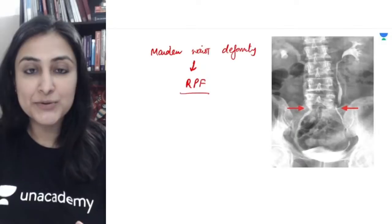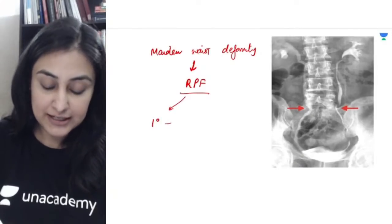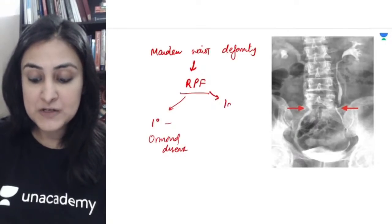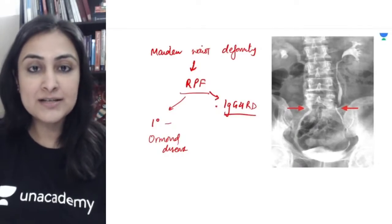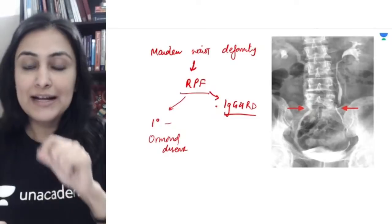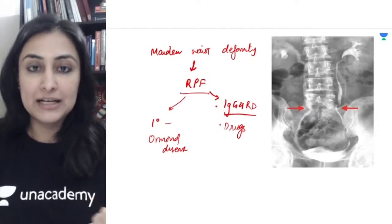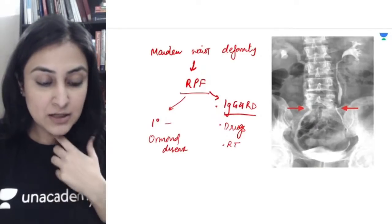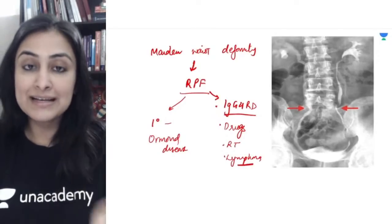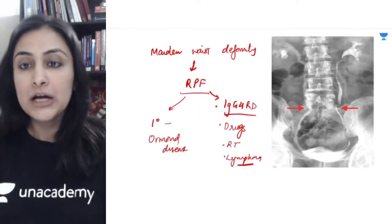There are multiple causes of retroperitoneal fibrosis. When no cause is found, it is primary — called Ormond's disease. One important cause now is IgG4-related disease, a multisystemic lymphoplasmacytic sclerosing disease with inflammation and fibrosis. Various drugs — particularly beta blockers and methysergide — can cause this. Radiotherapy can also cause this, as can secondary fibrosis from treated lymphoma.